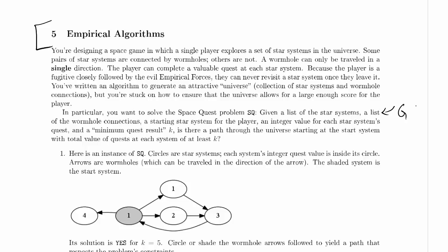A starting star system for the player. An integer value for each star system's quest, so these are the weights of the nodes. And a minimum quest result, K. So that's a threshold that sounds very decision problem-y. Is there a path through the universe starting at the start system with total value of quests at each system of at least K?